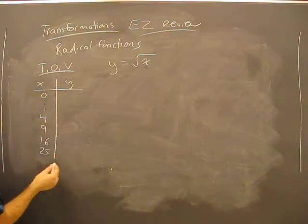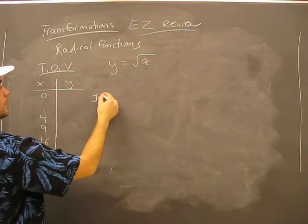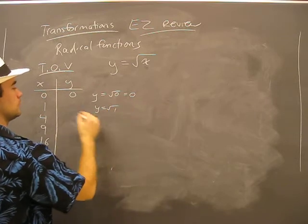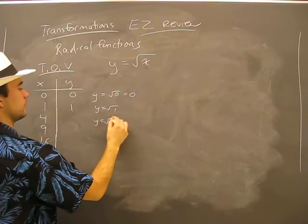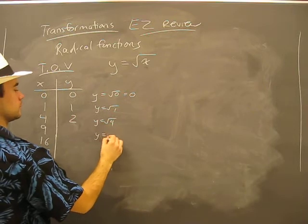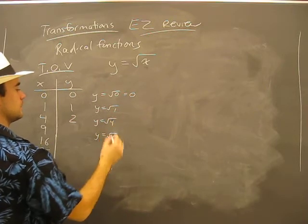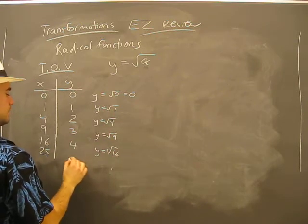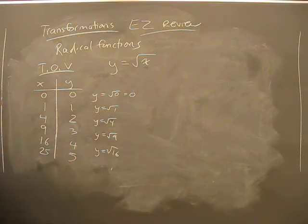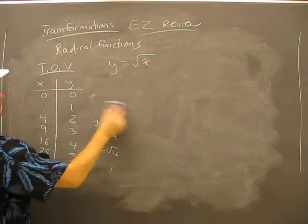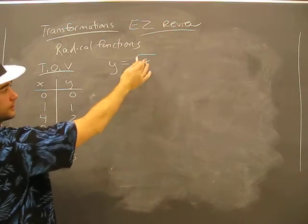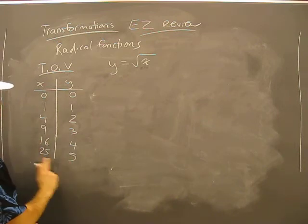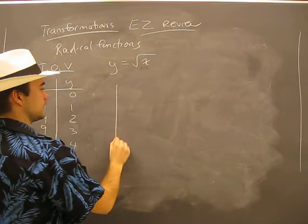Here y equals root 0, well that's 0. Y equals root 1, that's 1. Y equals root 4, that's 2. Y equals root 9, that's 3. Y equals root 16, that is 4, and of course that would be 5. Just like that, by inserting our random planned values in x, we get our pairings. These are coordinates on our graph.